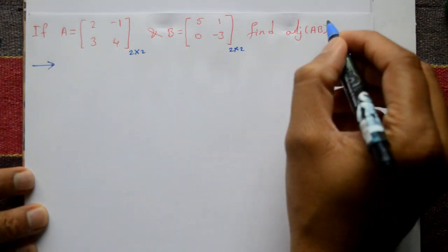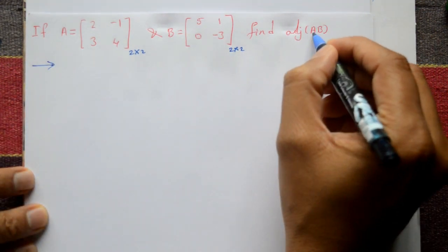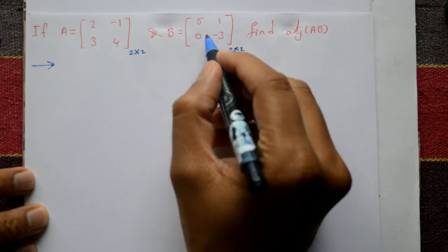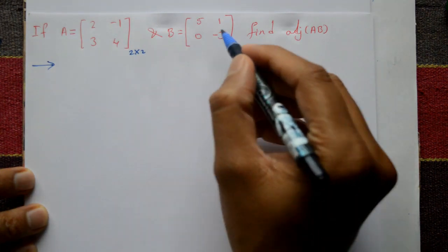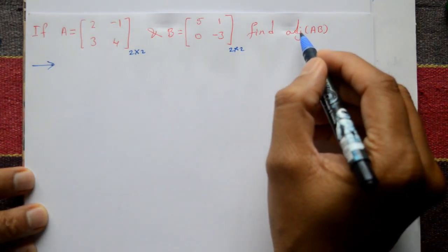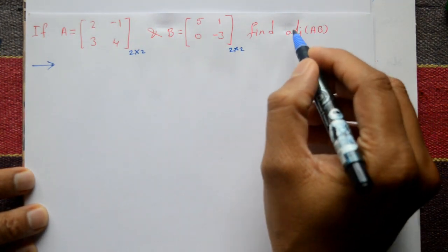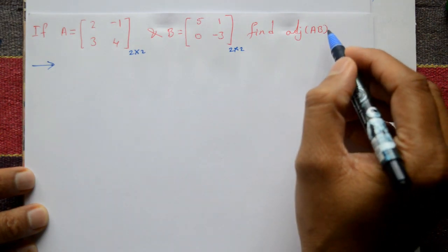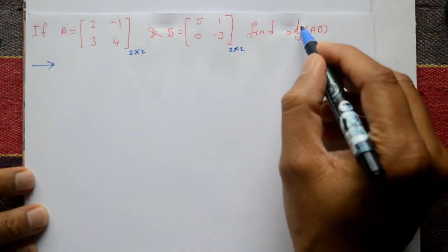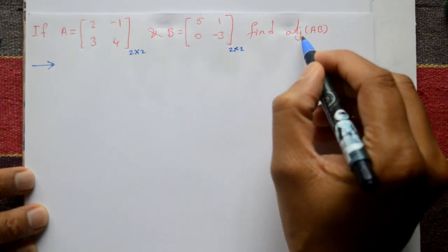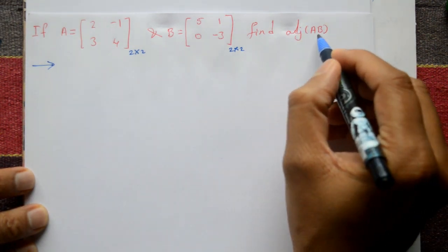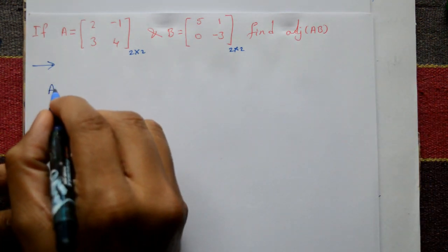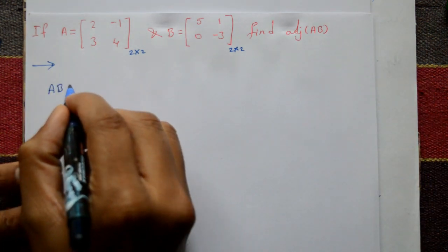First we need to calculate A into B — matrix multiplication — then find the co-factor of that matrix, then transpose the matrix, which gives us the adjoint of AB.